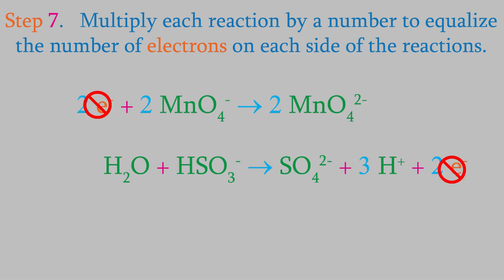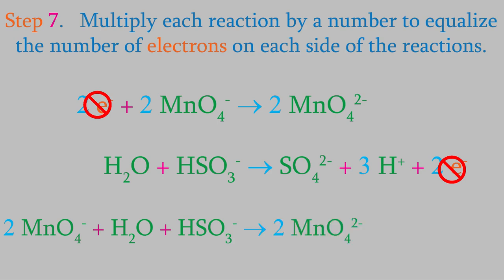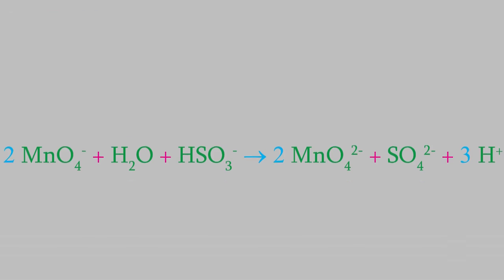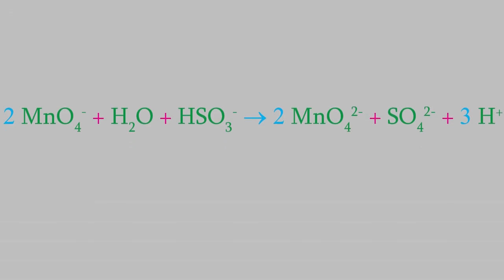When we add the 2 reactions, we get 2 permanganate ions, a water molecule, and a bisulfite ion on the left side, and 2 manganate ions, a sulfate ion, and 3 H plus ions on the right side. This reaction is balanced, and as you can see, there are H plus ions on the right, so this reaction must be taking place in an acidic solution.